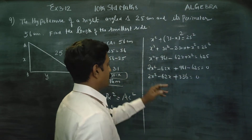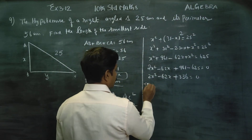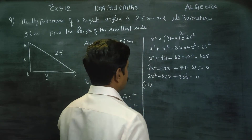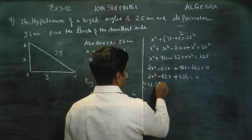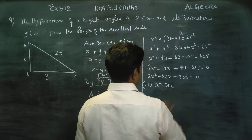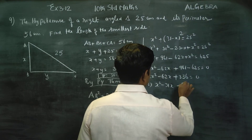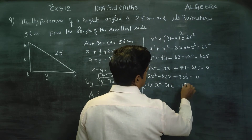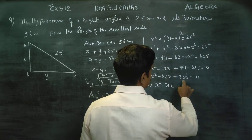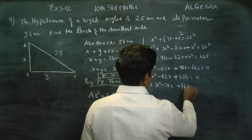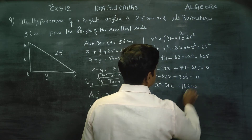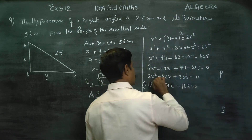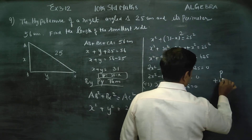Dividing the full equation by 2, all terms by 2, we get x² minus 31x plus 168 equals 0. Now we apply the product and sum method. The product is 168 and the sum is minus 31.